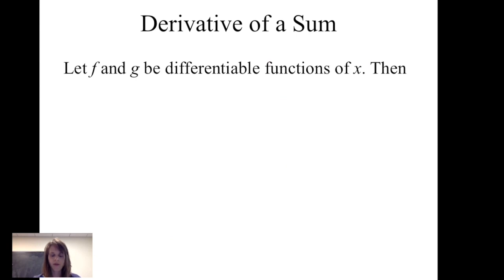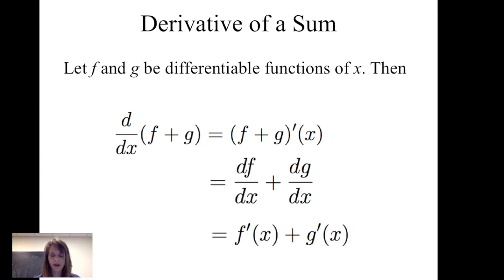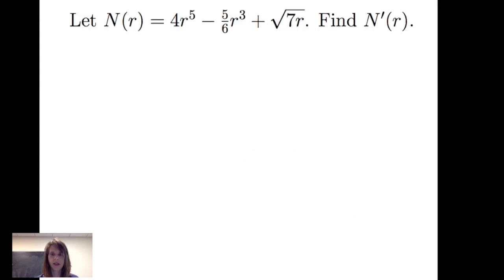If I have two differentiable functions of x and find their sum, the derivative of the sum is simply the sum of the derivatives, written as f prime of x plus g prime of x. Similarly, if I have a difference of two differentiable functions, the derivative of f minus g equals df dx minus dg dx. Let's apply these rules in an example.